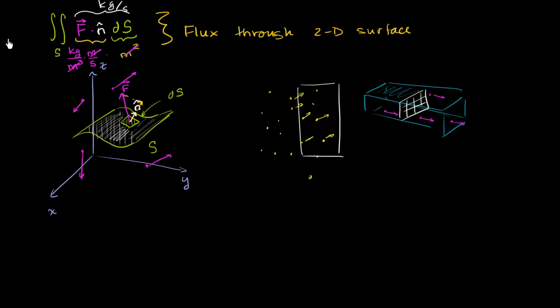Now that we hopefully have a conceptual understanding of what a surface integral like this could represent, I want to think about how we can actually construct a unit vector — a unit normal vector — at any point on the surface.